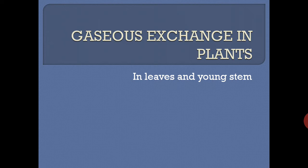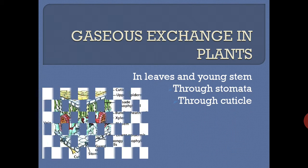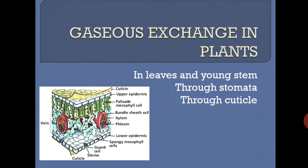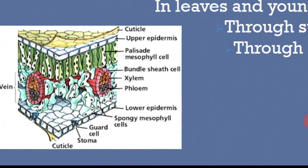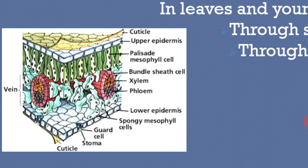In leaves and young stems, gas exchange occurs through stomata and through the cuticle. Plants breathe through stomata, which are tiny pores present in the epidermis of leaves and young stems.